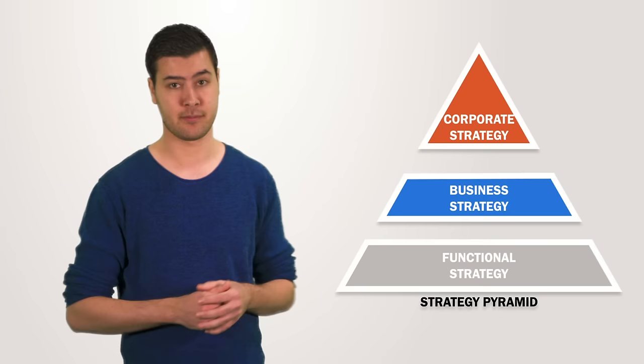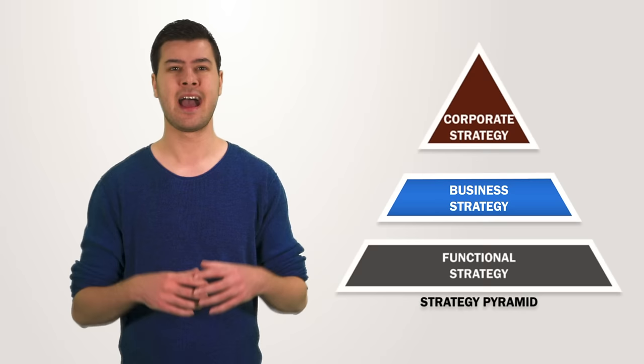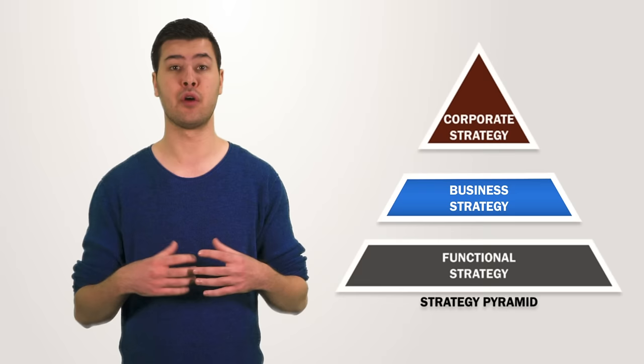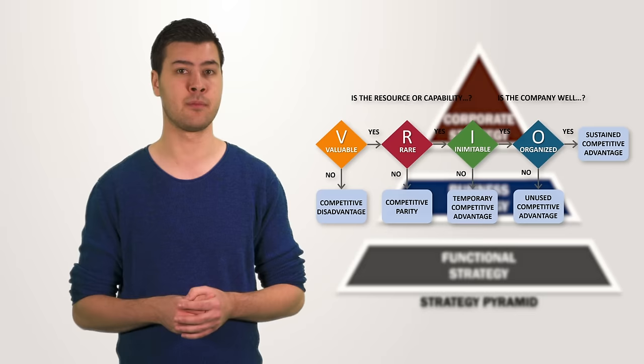Corporate strategy is different from business strategy and functional strategy. The business level strategy is what most people are familiar with and is about the question, how do we compete? How do we gain a sustainable competitive advantage over rivals? At this level we can use frameworks like the value chain analysis, Porter's five forces and the VRIO model.